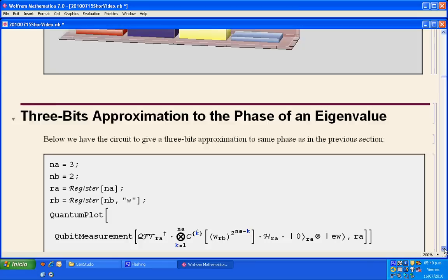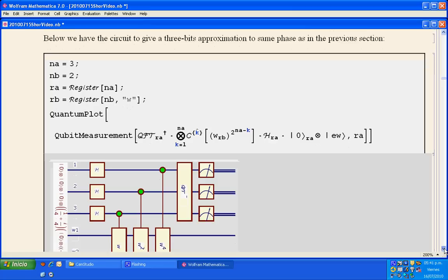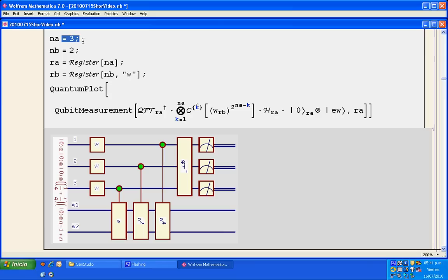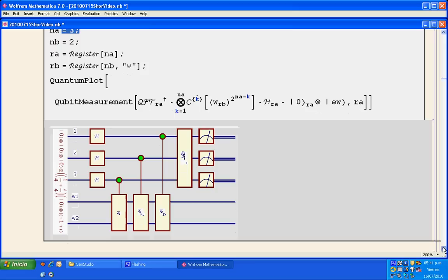Now, if instead of doing two-bits approximation, I do three-bits approximation, it's more or less the same command for the circuit. We just replace here that we're going to do the calculation with three. This is the circuit. Now we have three bits that are going to be measured and are going to give me the information.